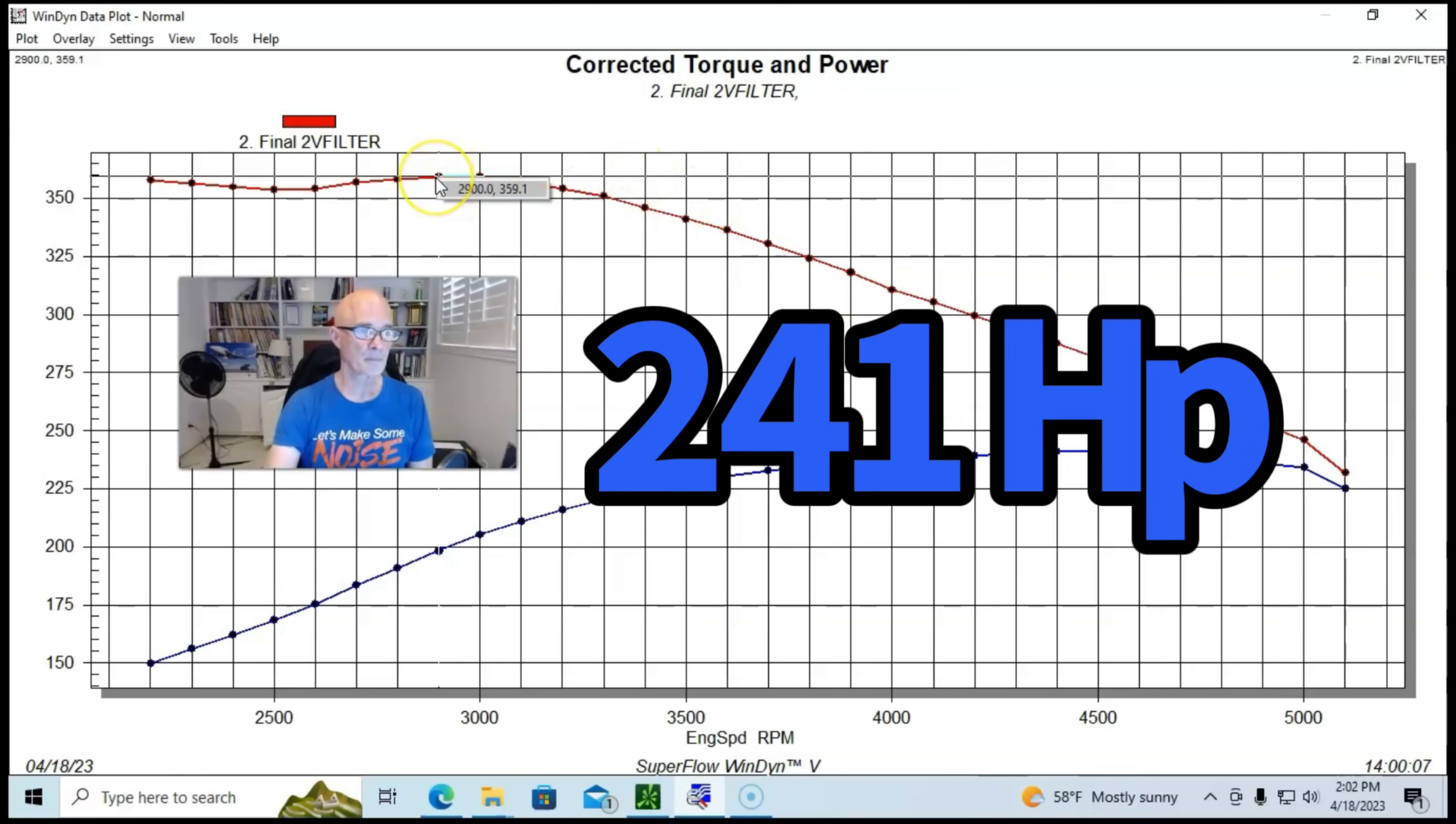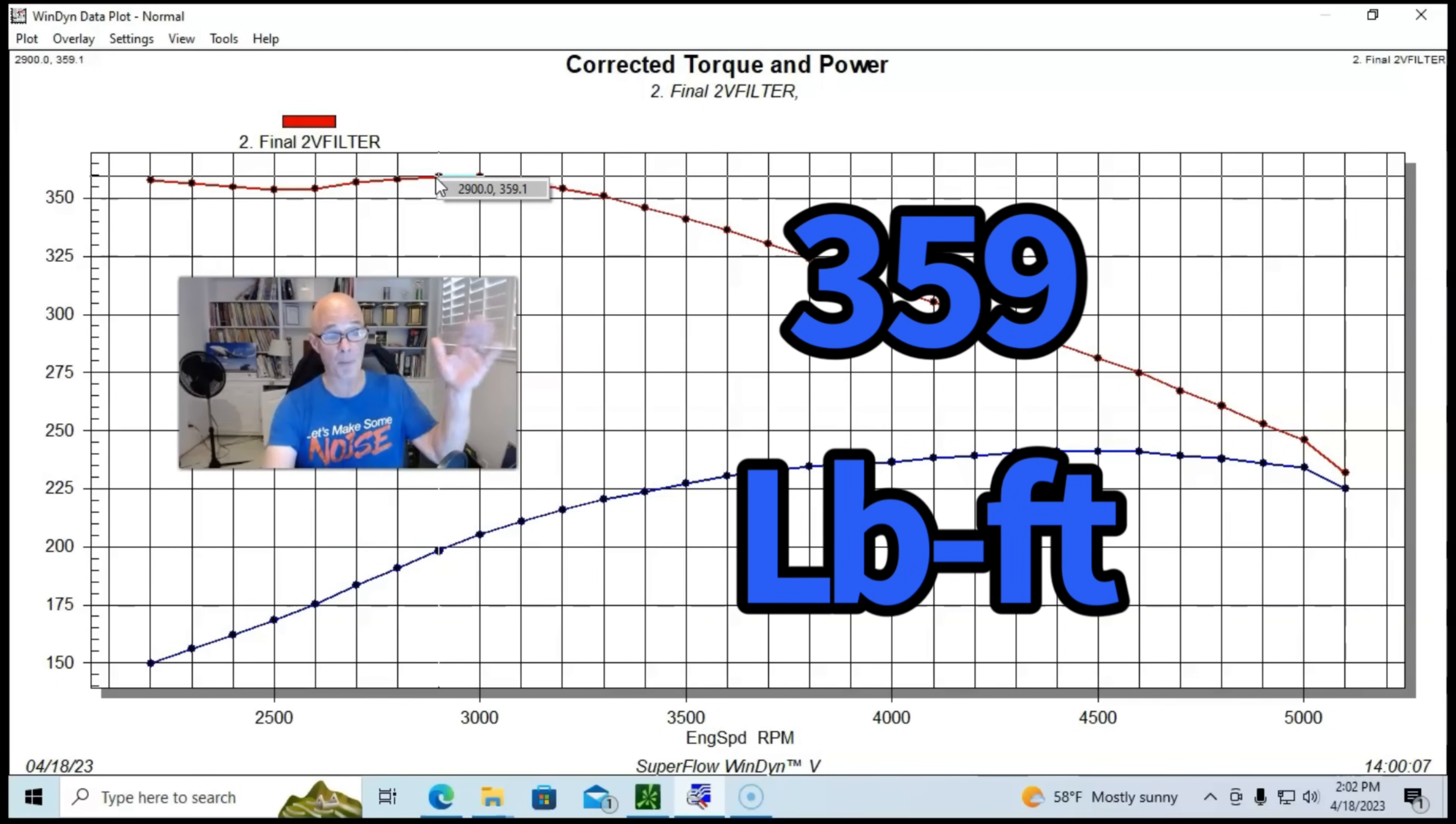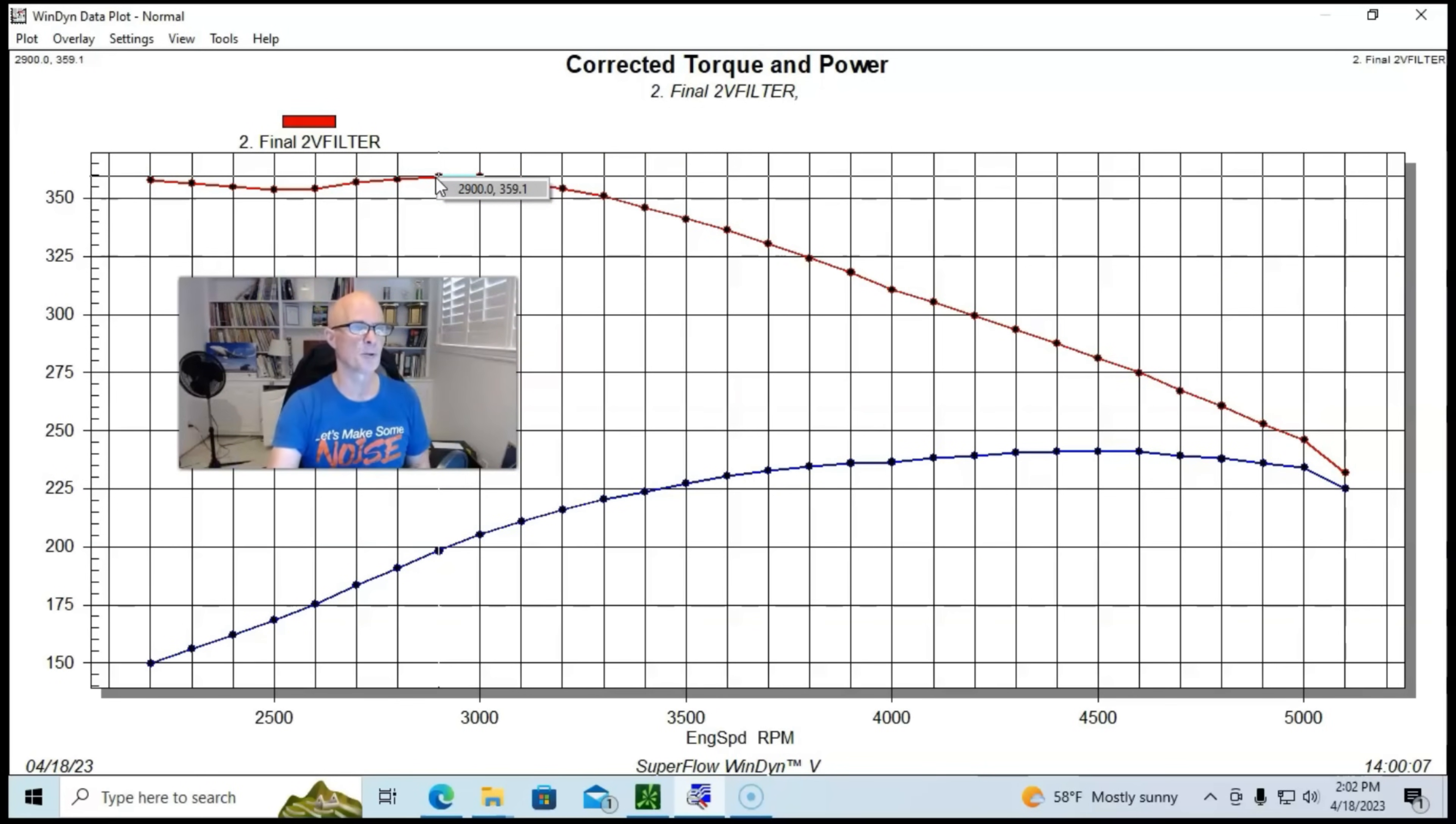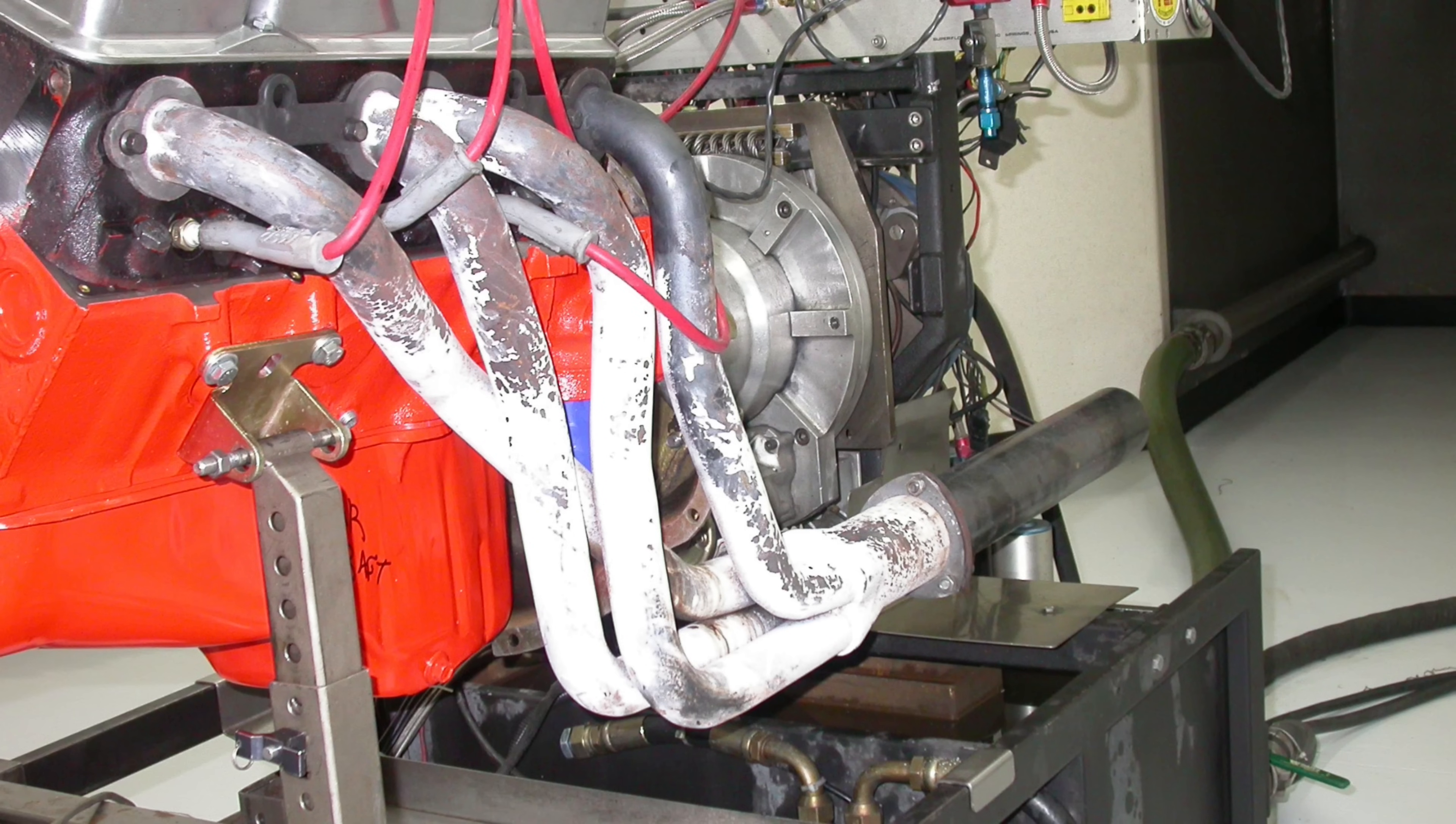We're going to start off with our 350 with a two-barrel combination - it produced 241 horsepower, 359 foot-pounds of torque. The first thing we did was install a set of headers on it.